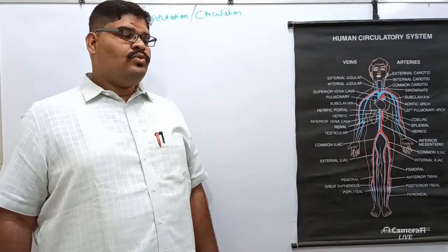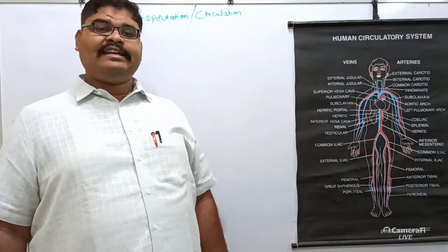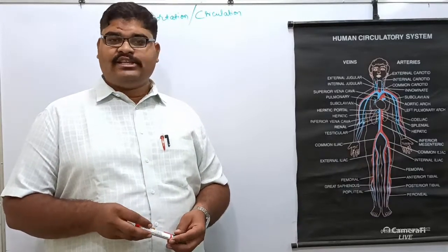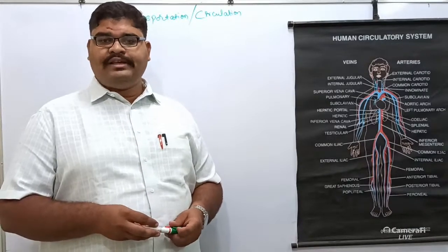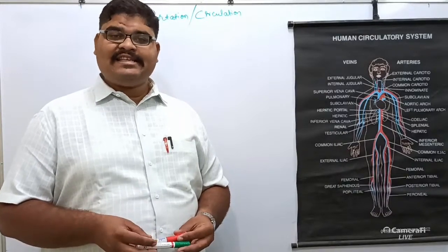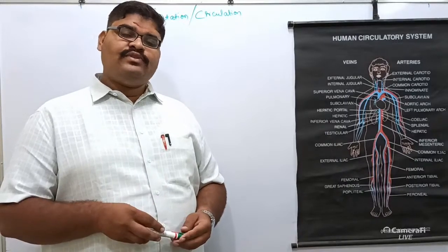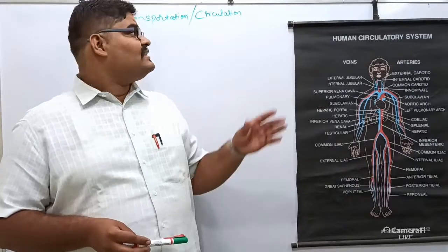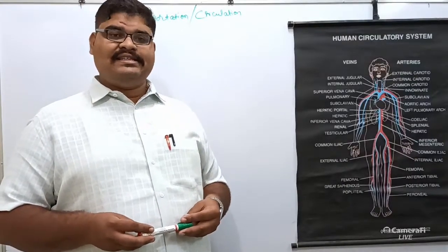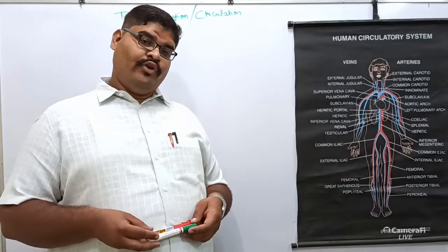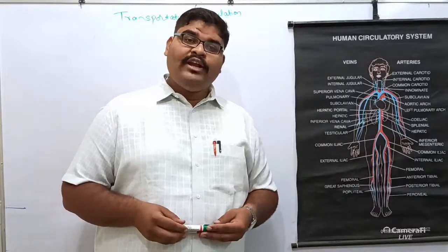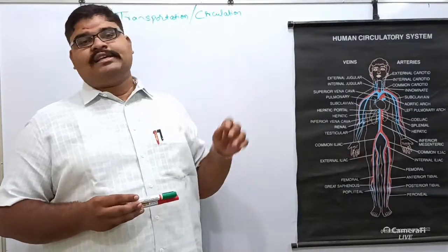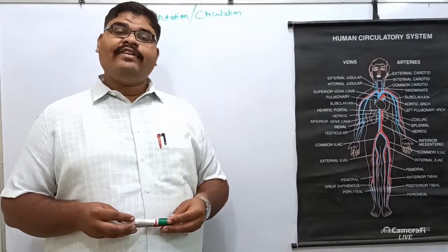Significance of the circulatory system: we eat food and in our GI tract, that is in our digestive system, we digest the food and absorption of the nutrients takes place. Those nutrients must be converted into energy, and this takes place in the cell. The nutrients extracted from the food must reach each cell through the circulatory system. For energy synthesis, we also require oxygen, and that oxygen is also supplied through the circulatory system.